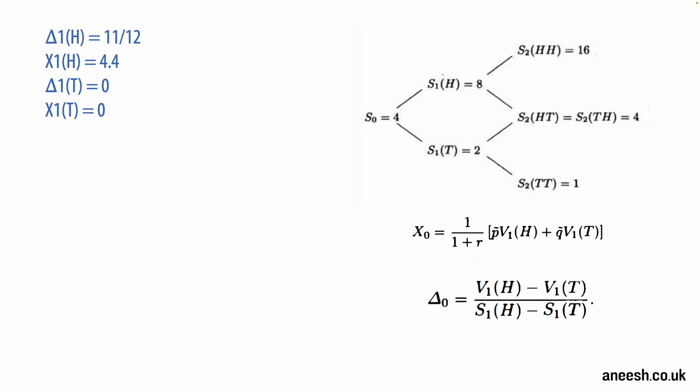So we can derive our delta 0 position by using V1(H) of 4.4, V1(T) of 0, S1(H) of 8 and S1(T) of 2 to get 4.4 divided by 6. And the risk-neutral price of the option at time 0, which is X0, is the discounted value of the expected value of the option at time 1, and that is 1 over 1.25 multiplied by 0.5 by 4.4 plus 0.5 times 0, and that's going to be equal to 1.76.